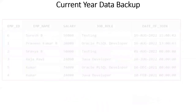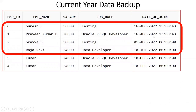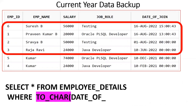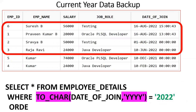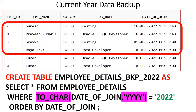The next requirement is current year backup. If I put SELECT * FROM employee_details, it will project all records. I need to filter: WHERE TO_CHAR(date_of_joining, 'YYYY') = '2022' — extracting only the year from the date and matching with 2022. The first four records get matched. On top, using CTAS: CREATE TABLE employee_details_BKP_2022 AS ... By seeing the table name, you can say this is the backup table of employee_details for 2022.